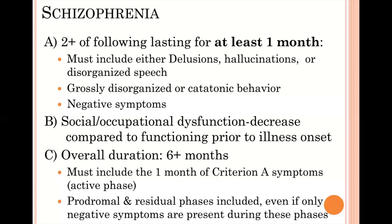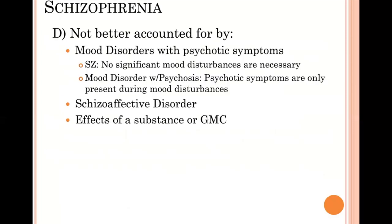Those time frames may be less severe — especially in the beginning they may have only had negative symptoms, and may even have been misdiagnosed as having depression for some period of time. But then they have that phase of active psychosis, and all together they've hit that at least six-month period. As always, it can't be better accounted for by other disorders or the use of a substance or general medical condition.